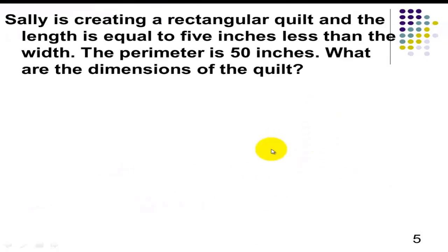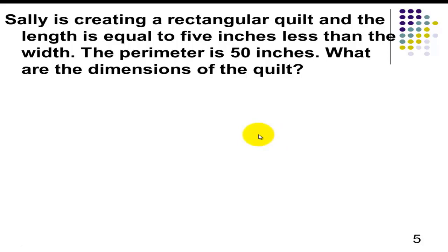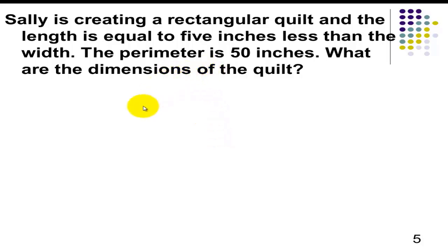Next question. Sally is creating a rectangular kilt, and the length is equal to 5 inches less than the width. The perimeter is 50 inches. What are the dimensions of the kilt? Go ahead and pause the video and solve this question. Note that you need to find the length and the width.